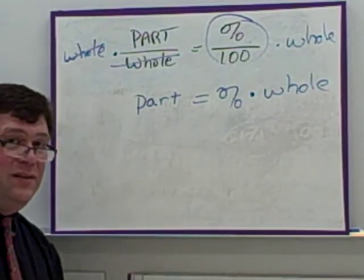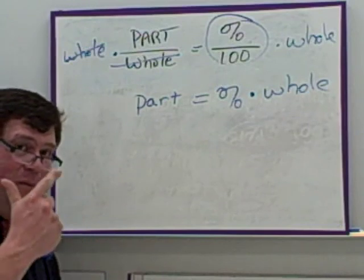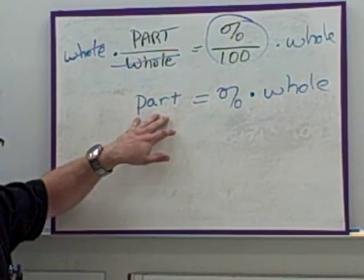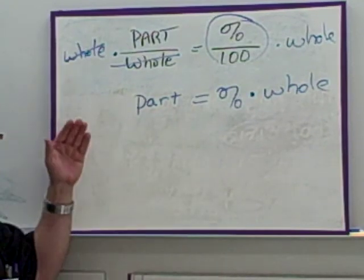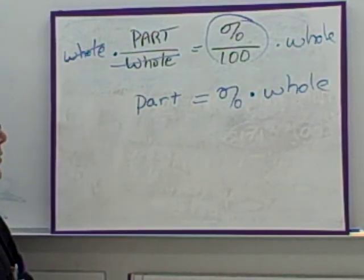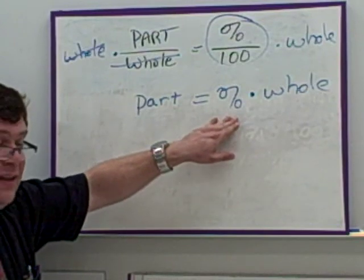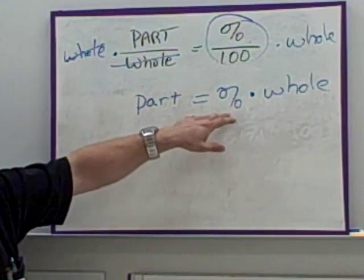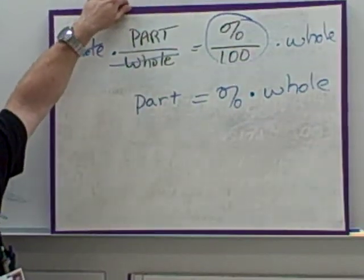We're going to work with this to figure out discount, markup, and sales tax because all three of those are parts. They're not the whole, they are part of the price. So if you know the percent and you know the whole, you can figure out what the tax, the discount, all that is based on the percent times the whole.